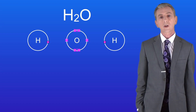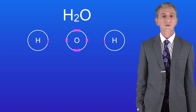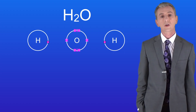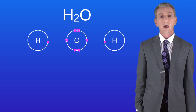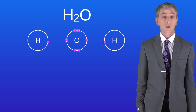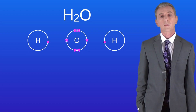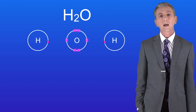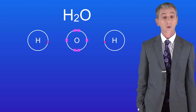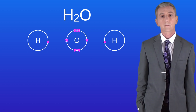As you can see, both hydrogen atoms need one more electron to achieve a full outer energy level. However, the oxygen atom needs two more electrons. I'd like you to pause the video now and see if you can draw the energy level diagram to show covalent bonding in the water molecule.